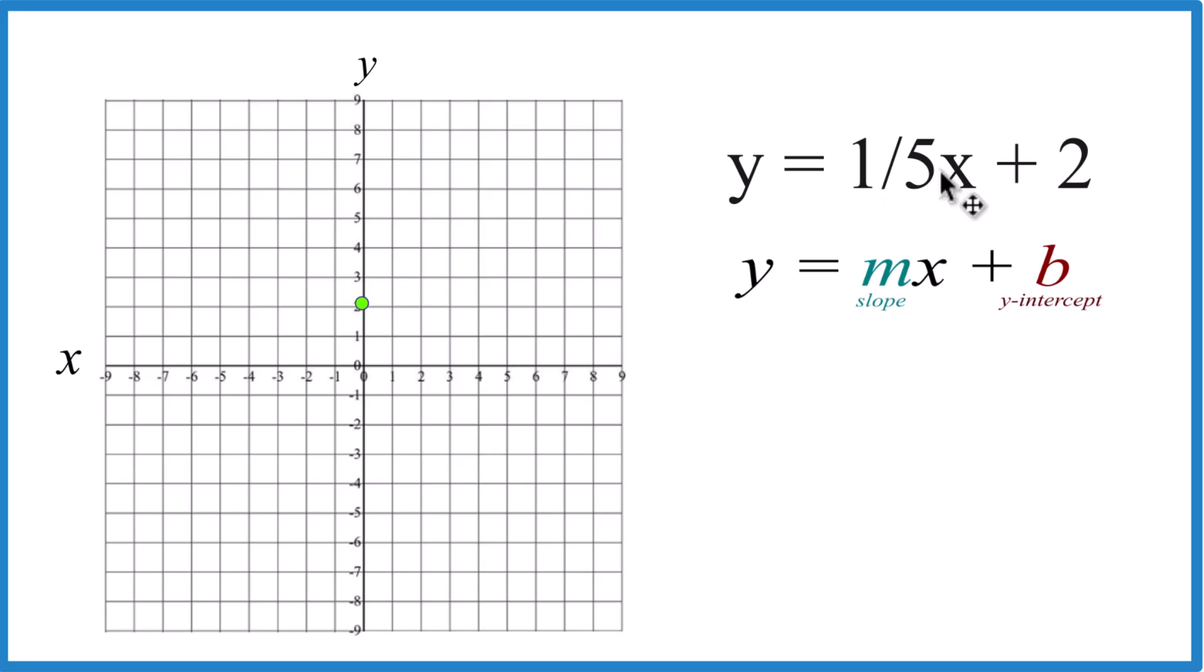For the slope m, that's 1 fifth. And you can think about that as rise over run. So we rise 1, run 5. Go to the y-intercept, rise 1, and go over 1, 2, 3, 4, 5.